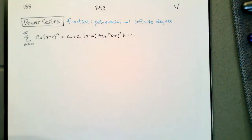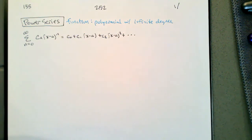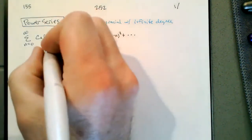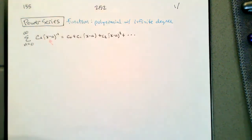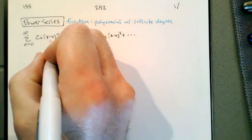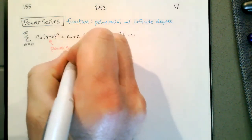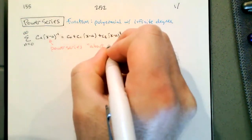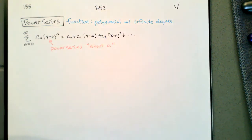Here's the general form of a power series. We have cn times x minus a to the n — a constant times a power of x minus a. This is a power series about a, which means it's in terms of x minus a. So we'll say this is a power series about a because all the terms have powers of x minus a.